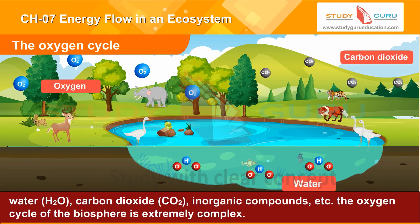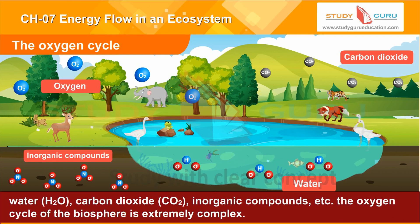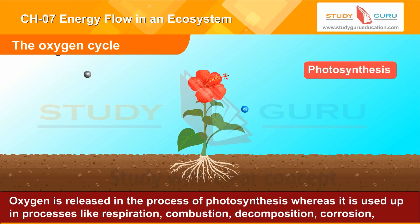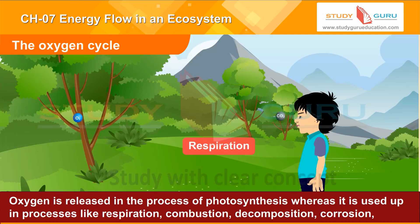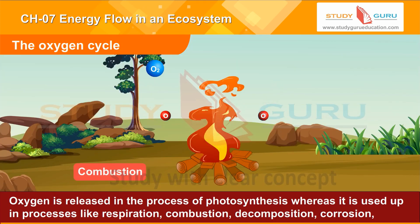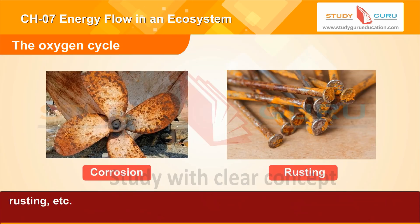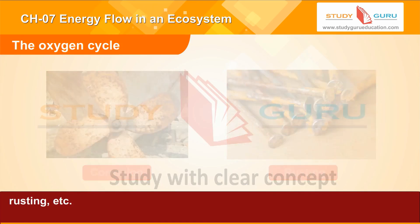The oxygen cycle of the biosphere is extremely complex. Oxygen is released in the process of photosynthesis, whereas it is used up in processes like respiration, combustion, decomposition, and corrosion or rusting.